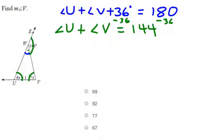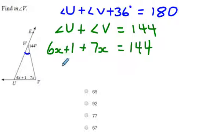So how do we solve that? Well our angles are 6x plus 1 is the angle for u, and 7x is for v, and together equal 144.